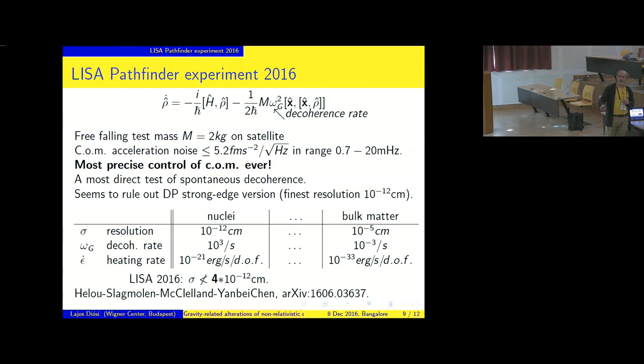And this is the most direct test of spontaneous decoherence. It seems to rule out the DP strong edge version because, as I said, this strong edge DP would heat each degree of freedom by 10 to the minus 21 ergs per second. And Helu, Slagmull, McClelland, and Yanbei Chen, this year, right after LISA Pathfinder published its first result, they pointed out that LISA results suggest that sigma cannot be smaller than 4 times 10 to the minus 25 centimeters. And LISA will improve on its data, so we expect that the strong edge resolution, 10 to the minus 12 centimeters, is going to be ruled out in the near future, if it is not already ruled out by the fresh data.